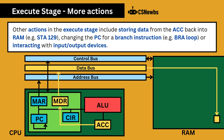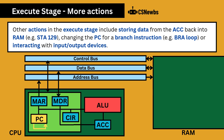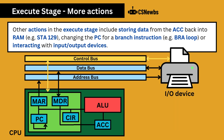Other actions in the execute stage include storing data from the accumulator back into RAM, such as store in memory location 129, changing the program counter for a branch instruction, such as branch always loop, or interacting with input and output devices.